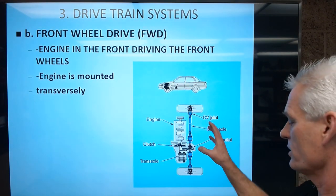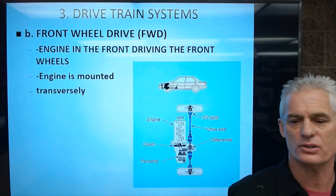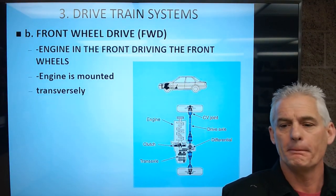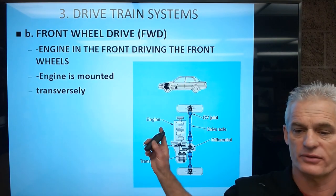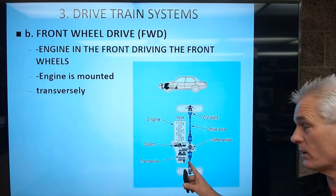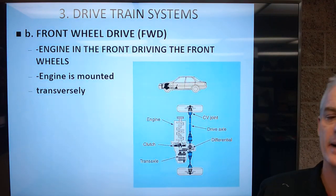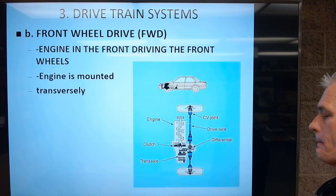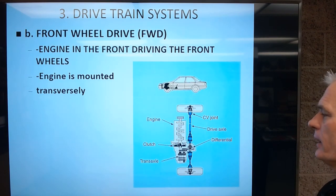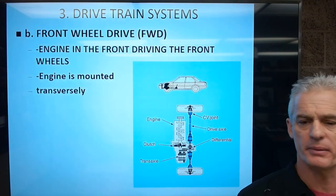In any case, the engine is mounted transversely or across the front end of the vehicle. It's a much more compact and inexpensive way of manufacturing a vehicle — you don't have a big long driveshaft. You do have two CV axles, which we call CV axles because they are constant-velocity axles with constant-velocity joints. It's more compact, easier, and cheaper to manufacture.